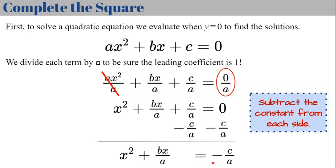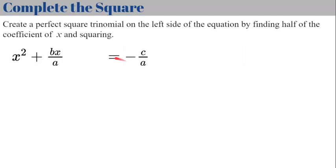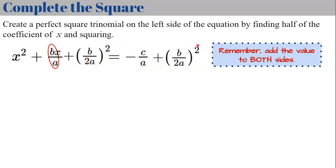We're completing the square on the standard form of a quadratic function. The next step is to create a perfect square trinomial on the left side by finding half of the coefficient of x and squaring it. Half of b over a is b over 2a, so we square that and add it to both sides.